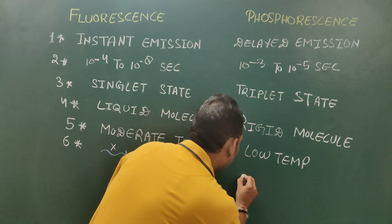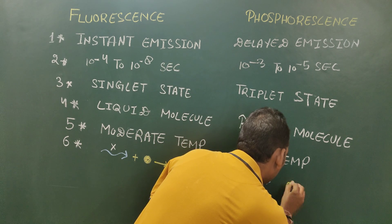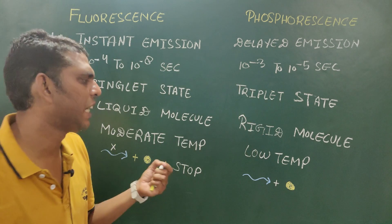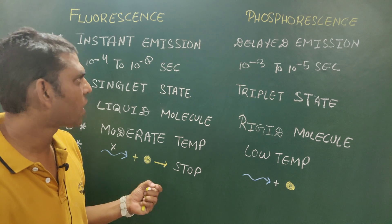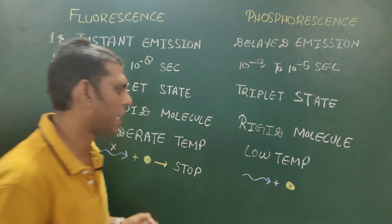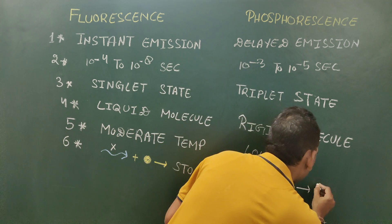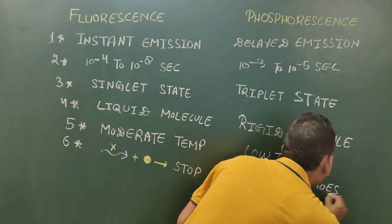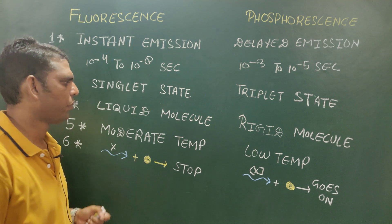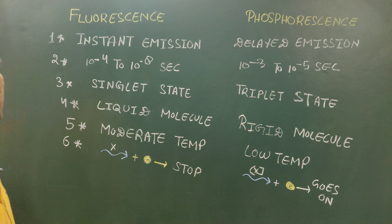But in the case of phosphorescence, if we block the radiation source, it does not affect the process of phosphorescence once it has started. In the absence of the energy source, the process of phosphorescence still goes on — from minutes to several hours.